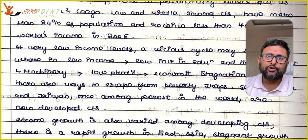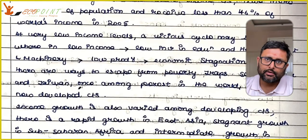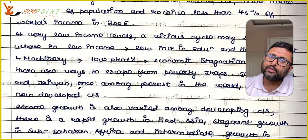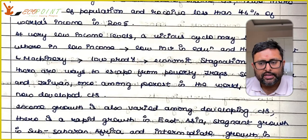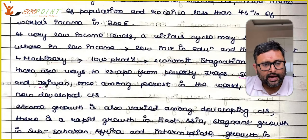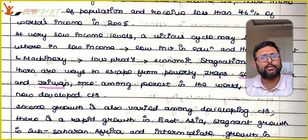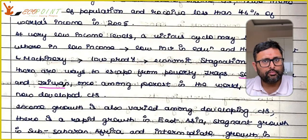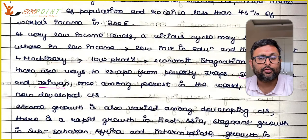But it is not that all developing countries always remain at low levels of income. There were countries like South Korea and Taiwan which were once among the poorest in the world, but they came out of this lower level of poverty, or lower level of equilibrium.